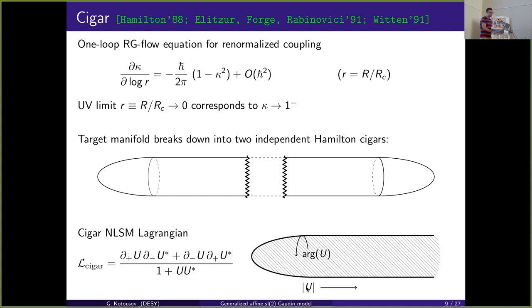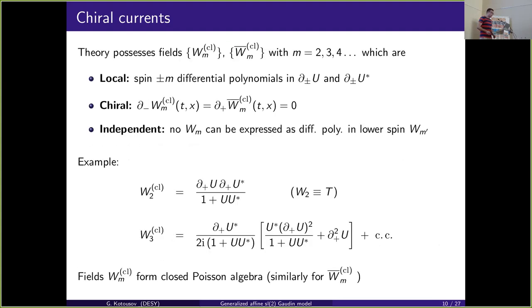Due to dimensional transmutation from UV divergences, the theory has a mass parameter. Taking the UV fixed point requires considering the beta function for the renormalized coupling kappa. As r→0, kappa tends to one from below, and the sausage becomes two independent Hamiltonial cigars. One can introduce complex coordinates where the absolute value measures the distance along the cigar's length and the argument is the angular variable around the cylinder.